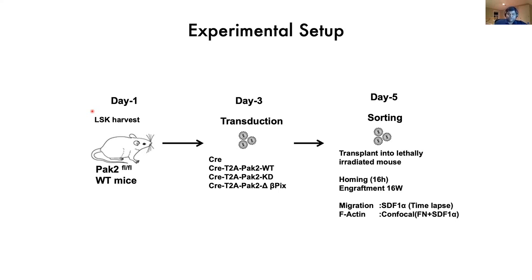We also measured stem cell migration in an SDF-1α gradient using time-lapse microscopy and observed cytoskeletal changes by staining stem cells with phalloidin (actin stain) using confocal microscopy. First, we confirmed our vectors were functioning correctly by isolating genomic DNA and amplifying the region where PAK2 is targeted. Controls showed the floxed allele intact, while all CRE-expressing mutants showed endogenous PAK2 deletion.